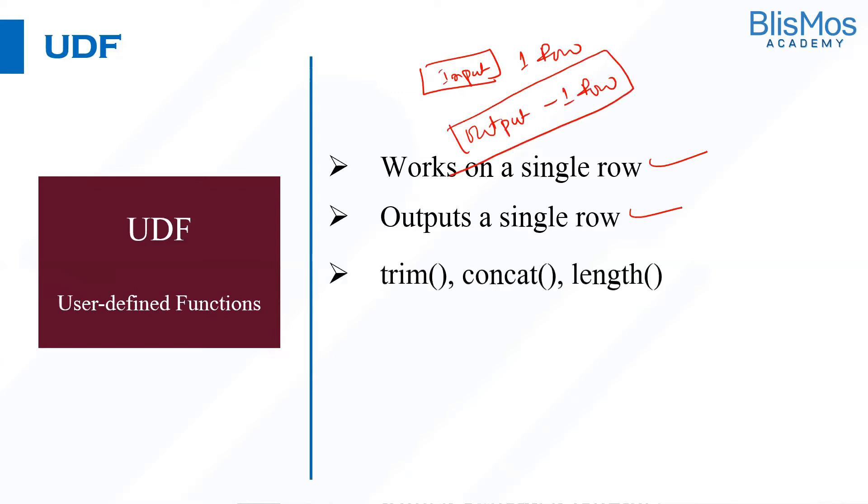We have some of the functions like trim, concat, length. All these functions take the inputs as a single row and outputs a single row. We also have other functions like round and floor.